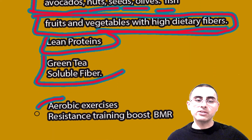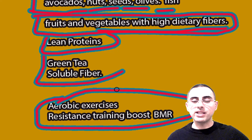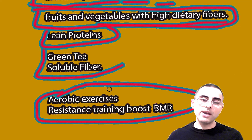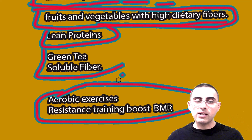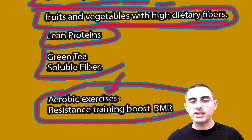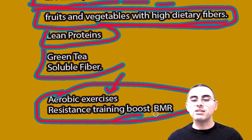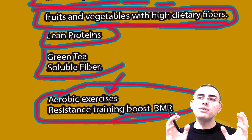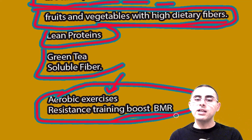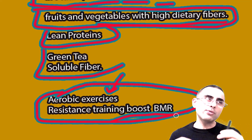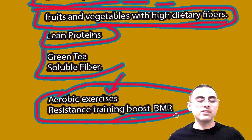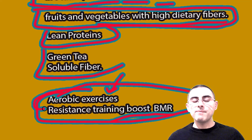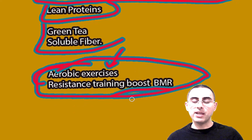Lean proteins, green tea, and soluble fibers are also important. Aerobic exercise plays a very important role — studies show it has a positive effect on visceral fat burning. Comparing aerobic to resistance training: aerobic exercise has more direct effect on visceral fat burning, while resistance training is beneficial because it increases basal metabolic rate and overall metabolism throughout the day. Selective reduction of only visceral fat is not possible, but aerobic exercise is the best solution.